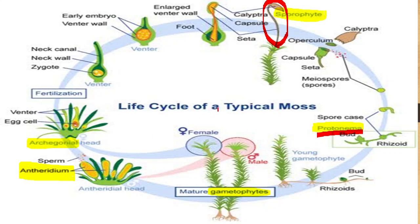So, half of the life cycle remains as the gametophyte phase and half involves the sporophyte phase. That is all about Bryophytes. Next, we will move on to the next division, that is Pteridophytes.